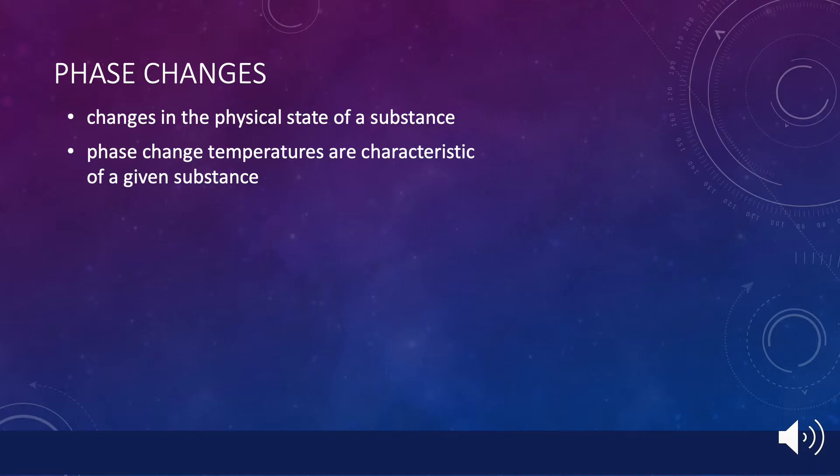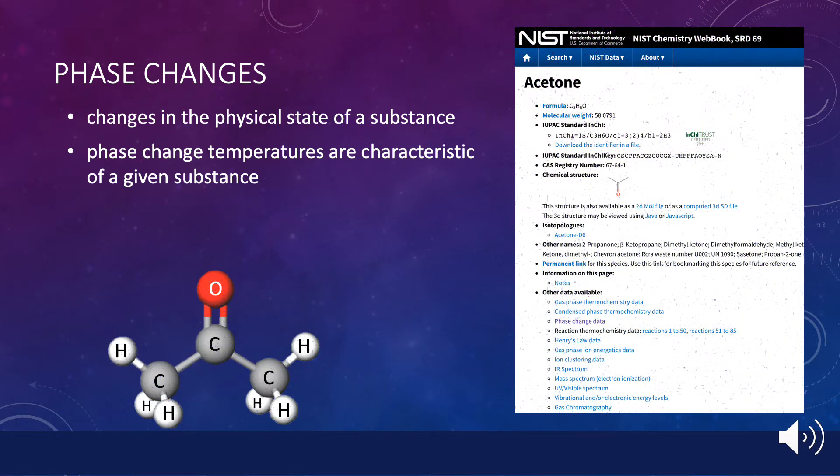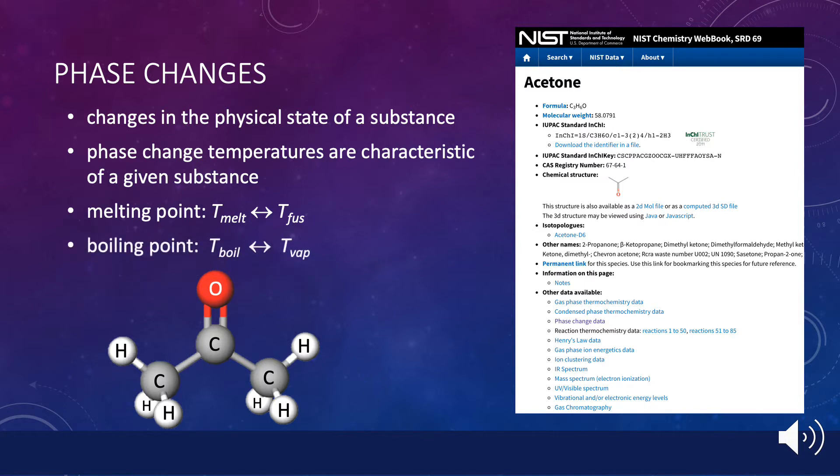Phase change data are provided in the NIST webbook and are normally labeled T-sub-fuse for the melting or fusion point and T-sub-boil for the boiling point or vaporization temperature. The main thing to know about this diagnostic is that it cannot uniquely identify a substance. More than one substance could have the same boiling point or the same melting point. However, these data can be used to eliminate possibilities.